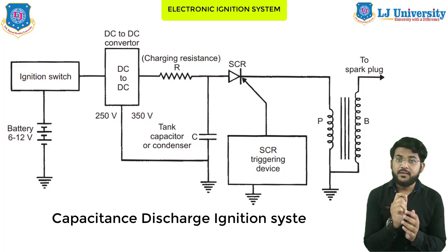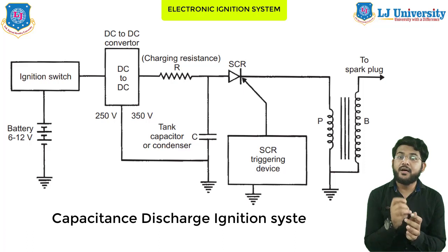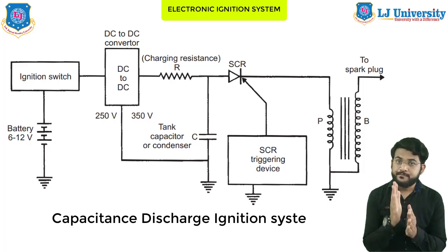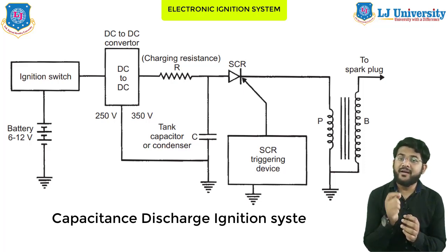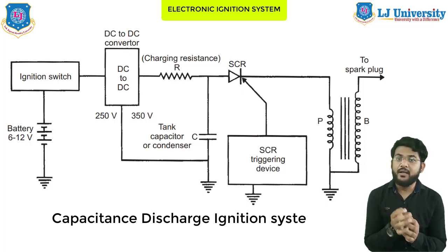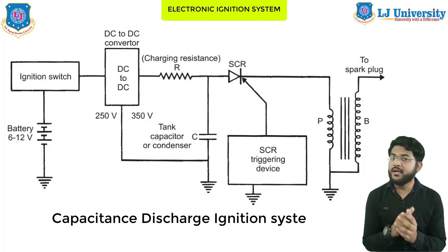This high voltage is used to charge the tank capacitor through the charging resistance. The charging resistance is designed to control the required current in the SCR. Depending on the engine firing order, when the SCR triggering device sends a pulse, the current flowing through the primary winding is stopped and the magnetic field begins to collapse. This collapsing magnetic field induces and steps up high voltage current in the secondary winding, which then jumps across the spark plug gap to produce a spark and ignite the air-fuel mixture.